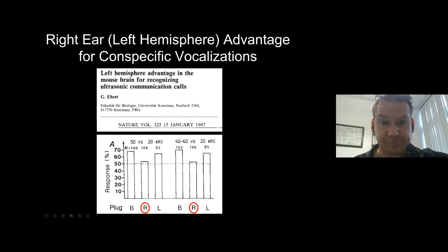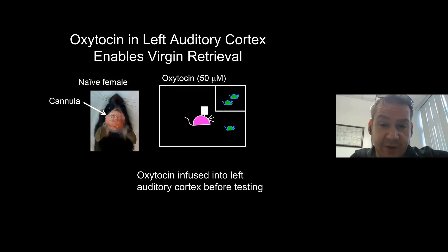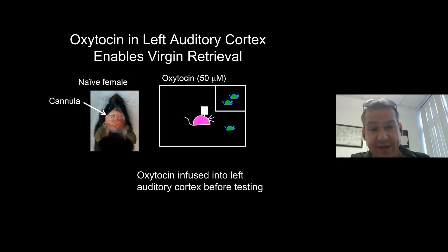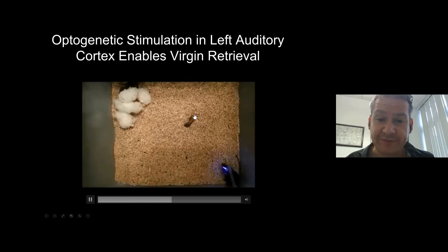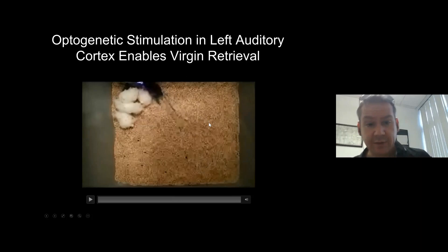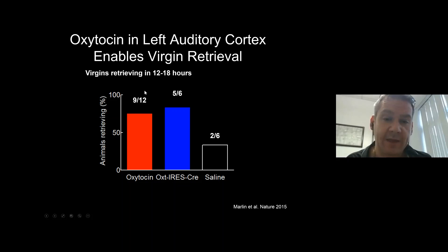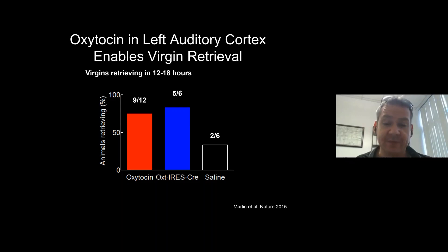What if we push on the oxytocin system in left auditory cortex? We cannulated naive animals and infused oxytocin directly into A1, or in transgenic animals expressing channelrhodopsin, we put a fiber optic into the cannula and shone blue light over left auditory cortex. Here's a movie of one of these animals receiving optogenetic stimulation — she's been co-housed only about 12 hours and has already figured out how to retrieve pups. Animals receiving oxytocin either exogenously or with endogenous optogenetic release — about three-quarters are retrieving at 12 to 18 hours, compared to one out of three receiving saline.